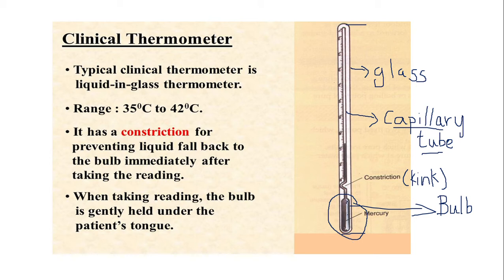There is a kink or bend — spelled K-I-N-K — which is also referred to as a constriction. The bend just above the bulb prevents the mercury from falling back into the bulb after the thermometer is removed from the patient's tongue.